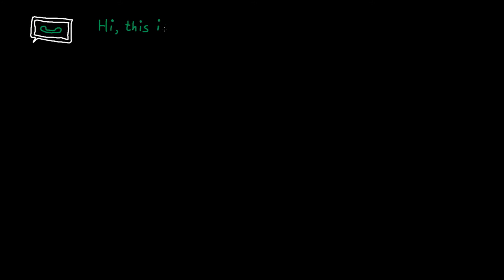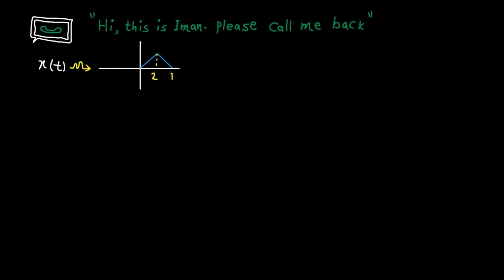Now I'm going to use a simple example to explain the meaning of different transformations. Let's say we have a voicemail like this: "Hi, this is Iman, please call me back." Let's assume the signal has this shape. The duration is 4 seconds and the maximum value is 2. So if you play this signal with normal speed, we hear: "Hi, this is Iman, please call me back." Now let's look at x(2t). What does x(2t) mean?